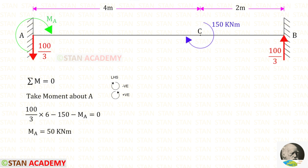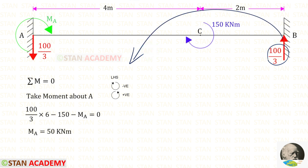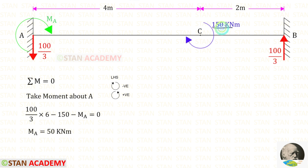Now let us take moments about A and find MA. RB is acting in the anticlockwise direction, so it is positive, and the distance is 6 — giving 100/3 multiplied by 6. The concentrated moment is acting in the clockwise direction, so it is negative. Assuming MA acts in the clockwise direction it is also negative. Solving, we get a positive value for MA, which confirms our assumption is correct — MA acts in the clockwise direction.